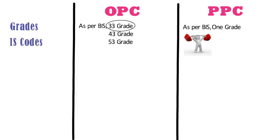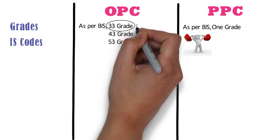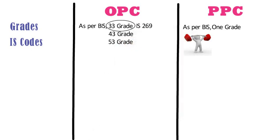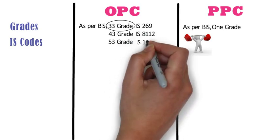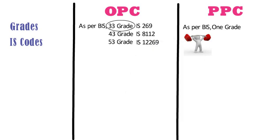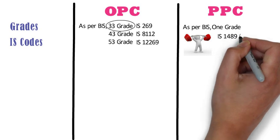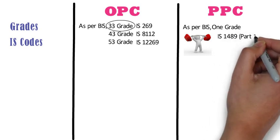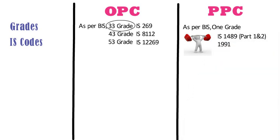IS codes. The IS code used for OPC 33-grade cement is IS-269, for 43-grade cement IS-8112 is used, and for 53-grade cement IS-12269 is used. Whereas the IS code used for PPC is IS-1489 Part 1 & 2, 1991.